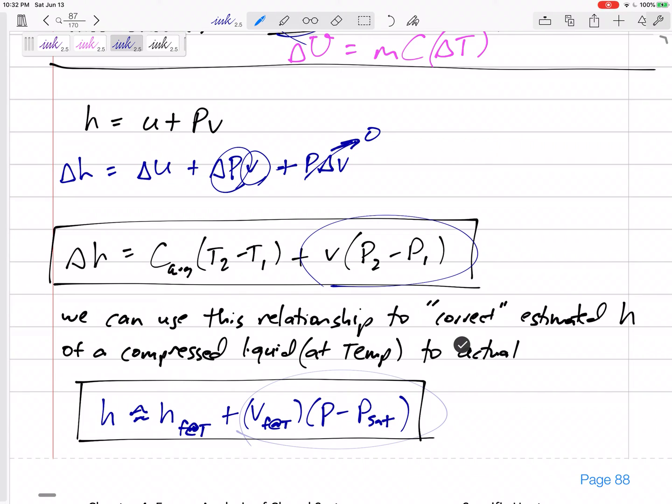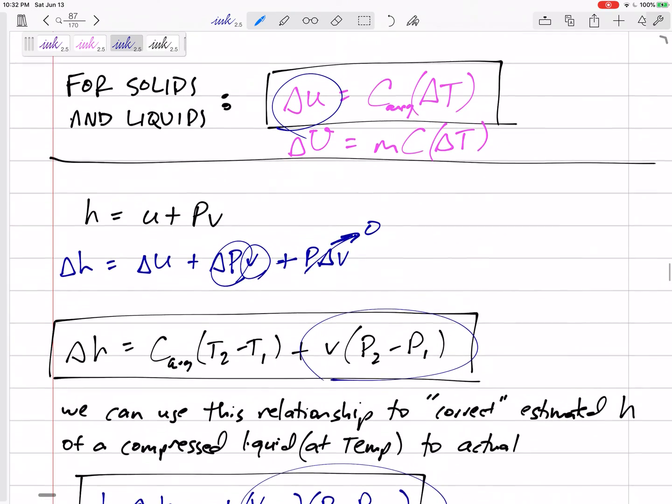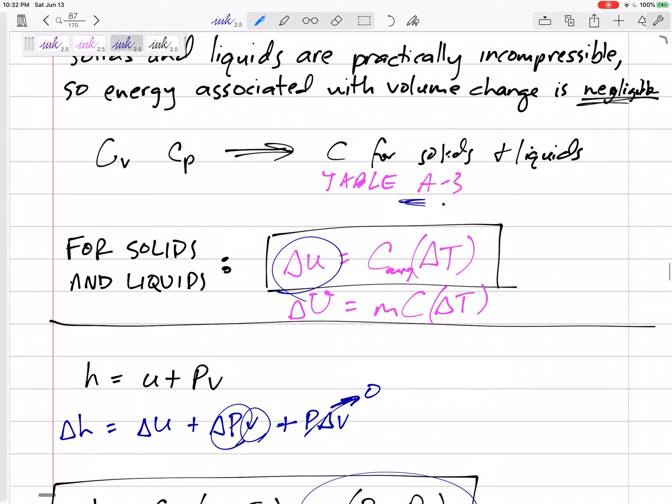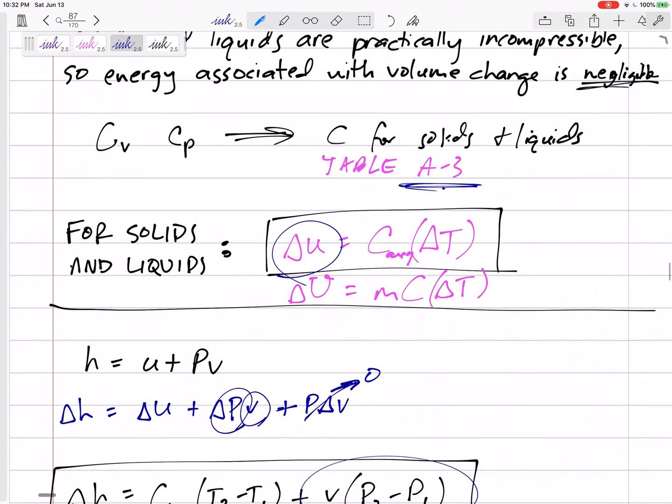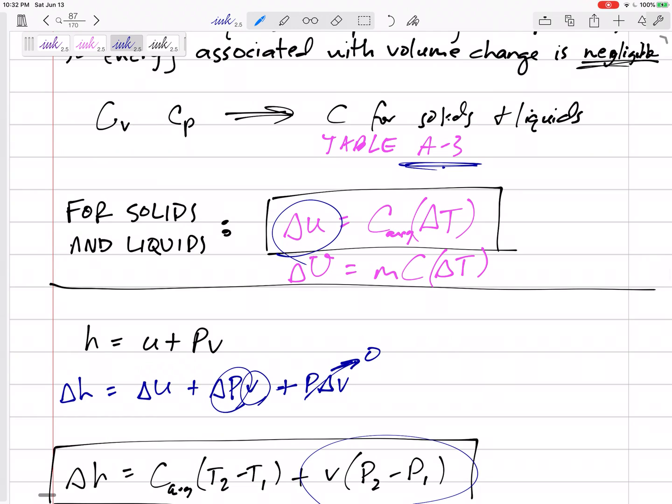All right, so let's use some problems, and again, this is for solids and liquids. Table A-3 is for solids and liquids. Do not, do not, do not use ideal gas equation for a solid or a liquid. It seems obvious, but I know in the test you're not thinking. You've got some equations on your formula sheet that you think you should use or could use. Don't use ideal gas for solids and liquids.